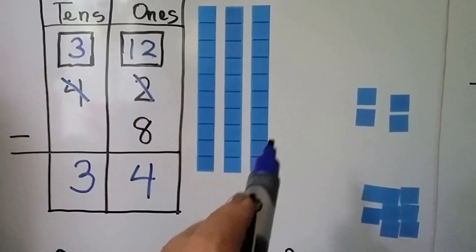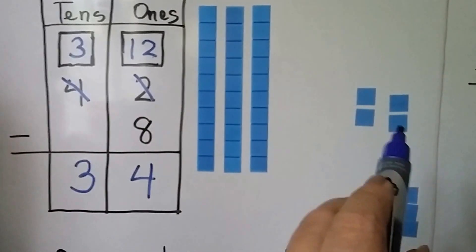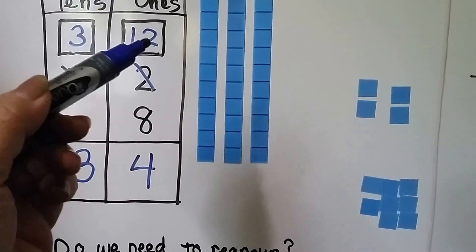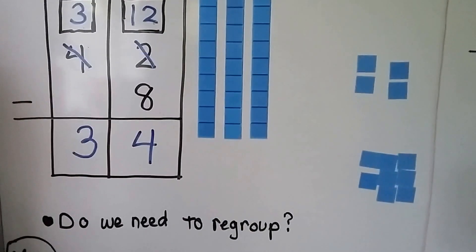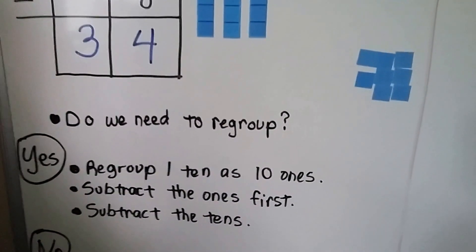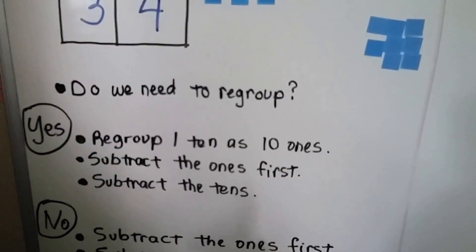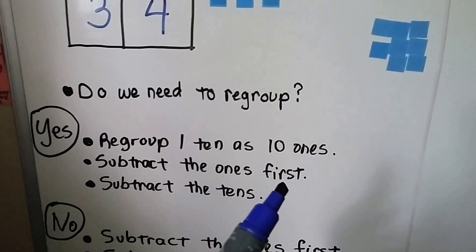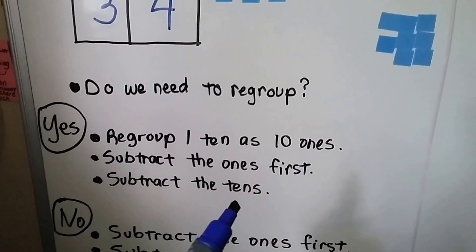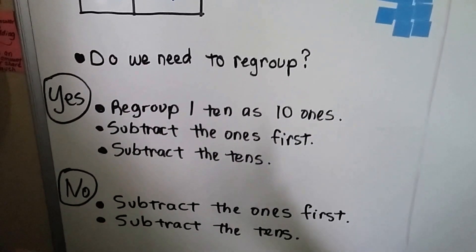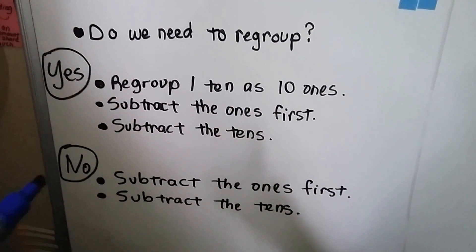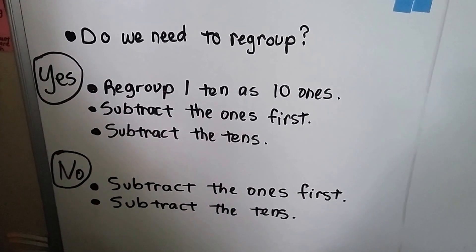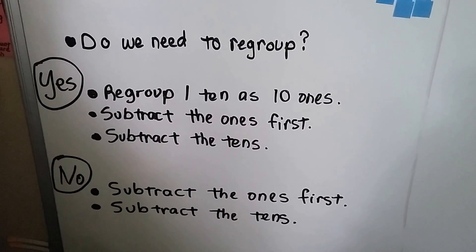We regrouped and gave a 10 to the 1's place as 10 ones, and we ended up with 12 ones. So we ask: do we need to regroup? If the answer is yes, we regroup 1 ten as 10 ones. Then we subtract the 1's place first, then we subtract the 10's. If the answer is no, we just subtract the 1's first and then the 10's — we don't regroup.